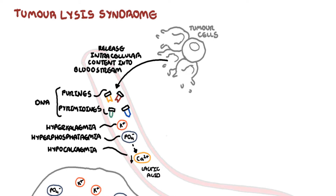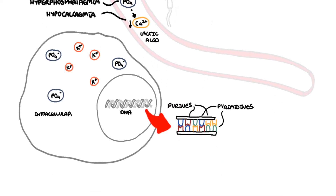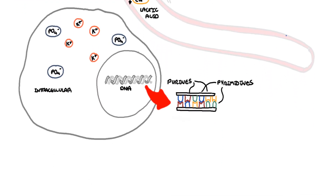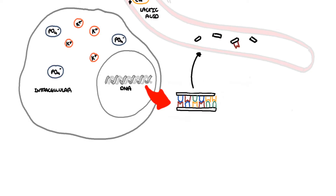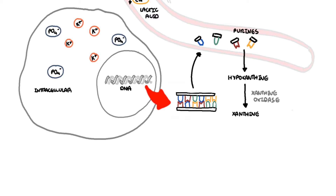In tumor lysis syndrome, the tumor cells, through chemotherapy treatment for example, die in high numbers and they release these intracellular contents into the bloodstream. Purine nucleic acids can actually be broken down to hypoxanthine, then xanthine, and from xanthine to uric acid via the enzyme xanthine oxidase. This will result in hyperuricemia.